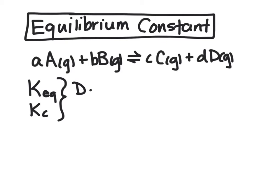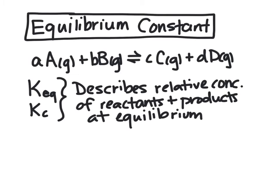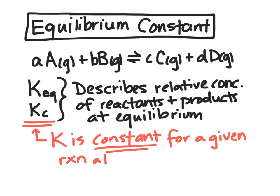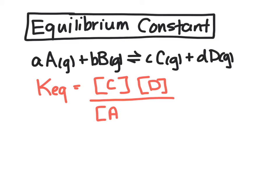The equilibrium constant describes the relative amounts of reactants and products at equilibrium. For a given reaction, K is going to be constant unless the temperature is changed. KEQ is always the same basic formula: it is the product of the molar concentrations of the products divided by the product of the molar concentrations of the reactants, raised to their coefficients. So the coefficients become the exponents. We do not include pure substances — so solids and liquids — in this expression.